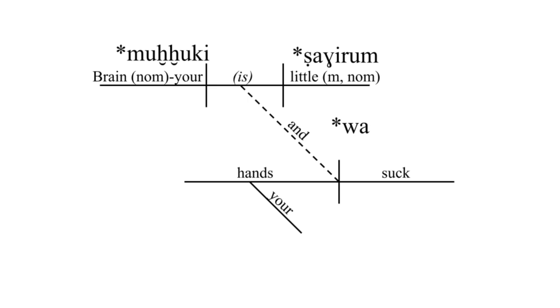The word for and is wa. For your hands, we get to use the dual, which is either frightening or interesting. There are two words for hand. I'm choosing yad because I hate geminated consonants. The dual form for a feminine possessive is, of course, yadakumai.